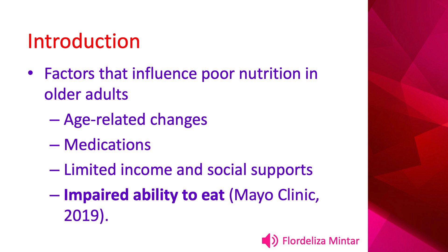Many factors influence poor nutrition in older adults. Some of these factors include age-related changes that decrease taste, smell, and appetite; medications which can affect appetite and GI upset, leading to altered nutrient absorption; dementia that can affect memory around remembering to eat or buying food; limited income and social supports; not being able to afford nutrient-rich foods; living rurally; eating alone; or depression. Additional factors include impaired ability to eat, changes in chewing or swallowing, and physical changes within the mouth like tooth loss or dentures.